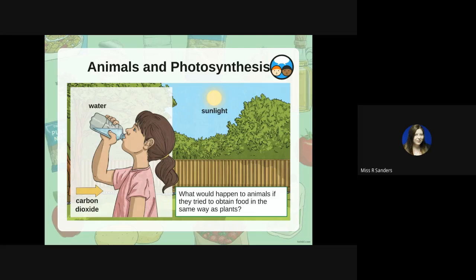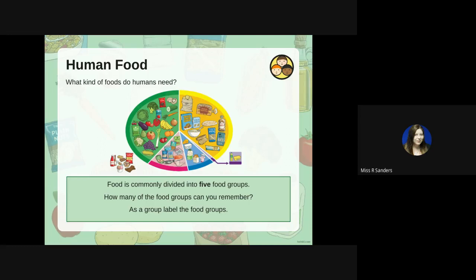What would happen to animals if they tried to obtain food in the same way as plants? It just wouldn't happen, because we can't make our own food. We have to buy our own food and then we can cook it — but we can't without actually going to buy something or catching something. So we're not like a plant; we can't create food in our bodies by absorbing things, and it's the same with animals.